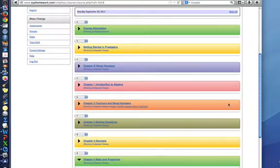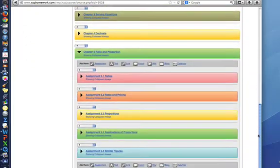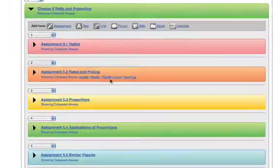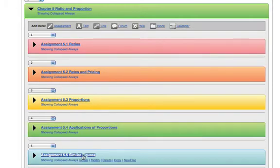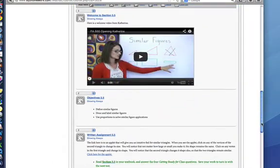Let me click on Chapter 5, Ratio and Proportion. Then you can see each of these assignments is a different section of the book. So let's click on Section 5.5, Assignment 5.5, similar triangles or similar figures.